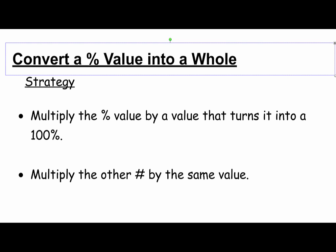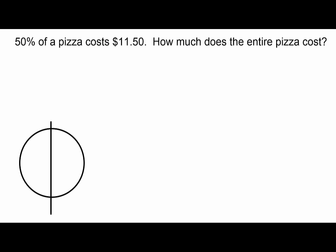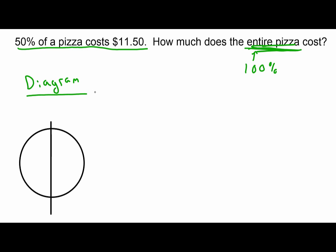Here's an example: 50% of a pizza costs $11.50 — how much does the entire pizza cost? Underline the word 'entire' and note that 100% represents the entire pizza — that's the whole thing, and that's what we want. We'll solve this using both a diagram and the T-chart method.